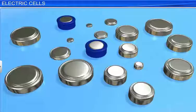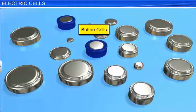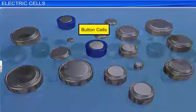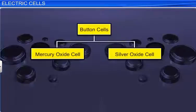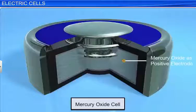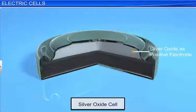Nowadays, cells of much smaller size compared to dry cells are used. These are called button cells. They are compact and have a longer life compared to dry cells. Two common types of button cells are the mercury oxide cell and the silver oxide cell. A mercury oxide cell has mercury oxide as the positive electrode and zinc as the negative electrode. In a silver oxide cell, silver oxide acts as the positive electrode and zinc as the negative electrode.